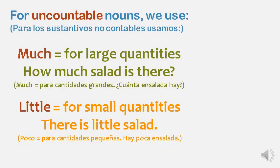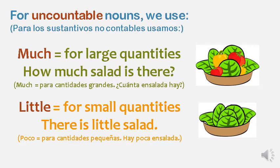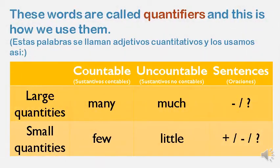For uncountable nouns, we use much for large quantities. How much salad is there? Little for small quantities — there is little salad. These words are called quantifiers, and this is how we use them.